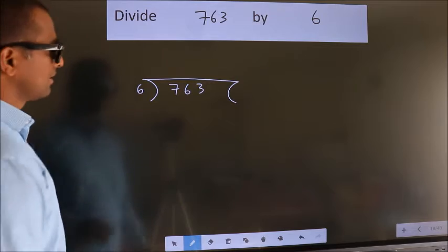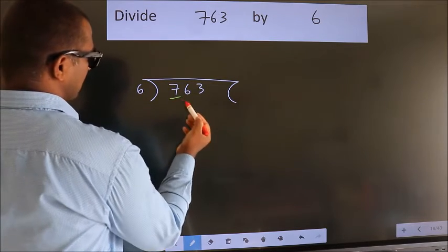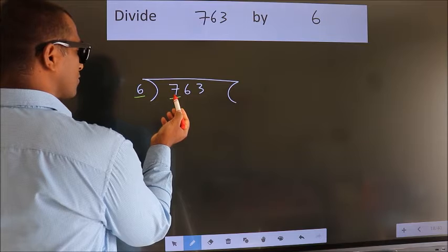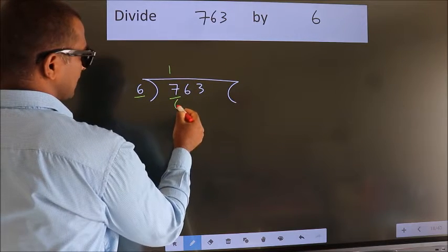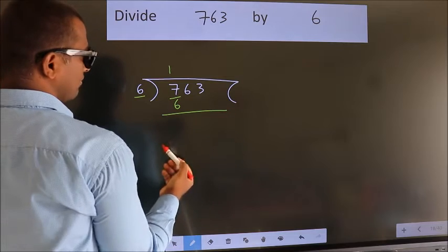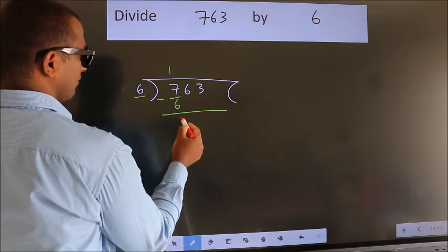Next. Here we have 7, here 6. A number close to 7 in the 6 table is 6 times 1 is 6. Now we should subtract. We get 1.